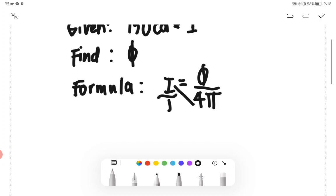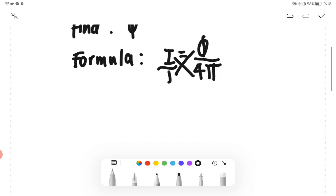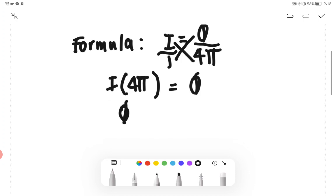Using cross multiplication, we will have the value of I multiplied by 4π equals φ. We are asked to find φ, which is equivalent to 4π multiplied by our intensity.